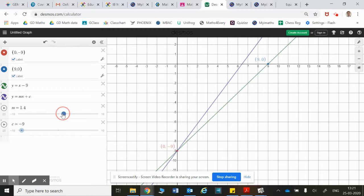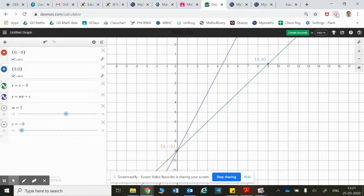We make the gradient two. There we go. We make the gradient two. Exactly on two. And you can see it still goes through minus nine. But now for every one you go across, it goes up two. That's gradient. For every one you go across, it goes up two instead. Thanks for listening. And keep asking questions.